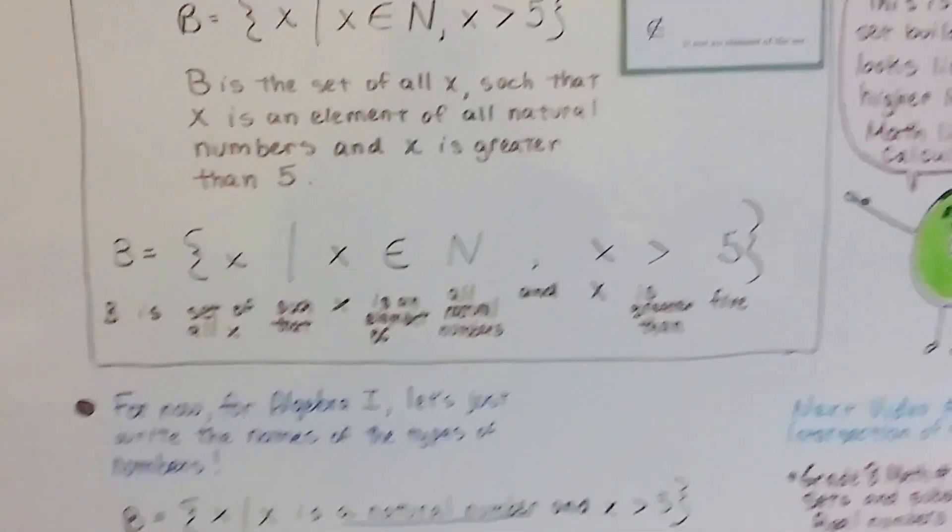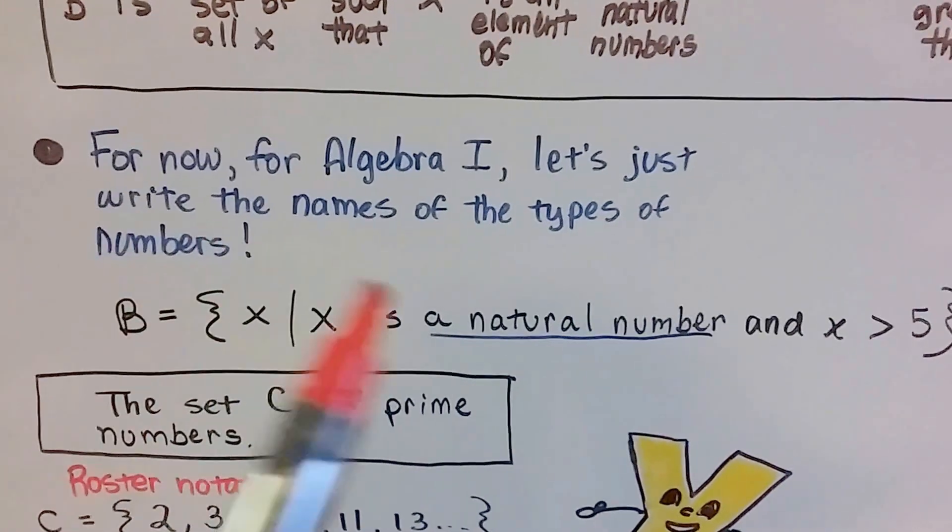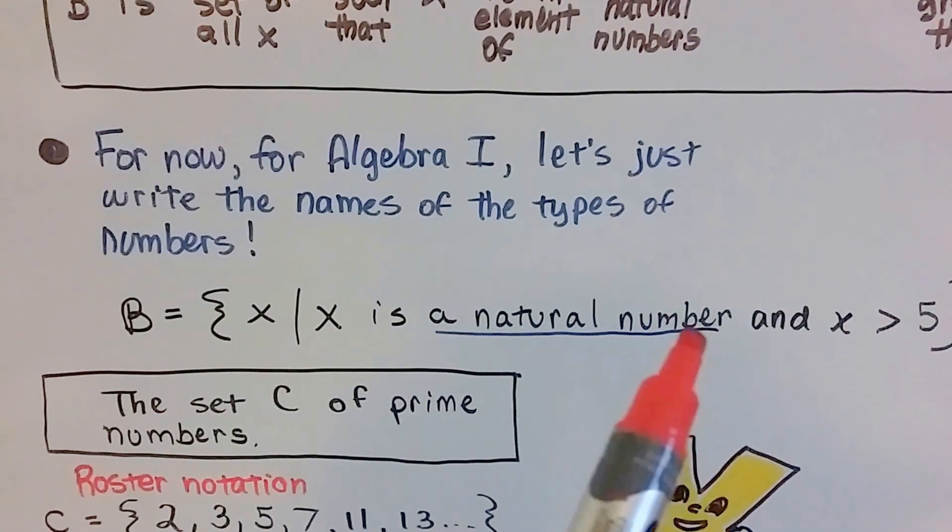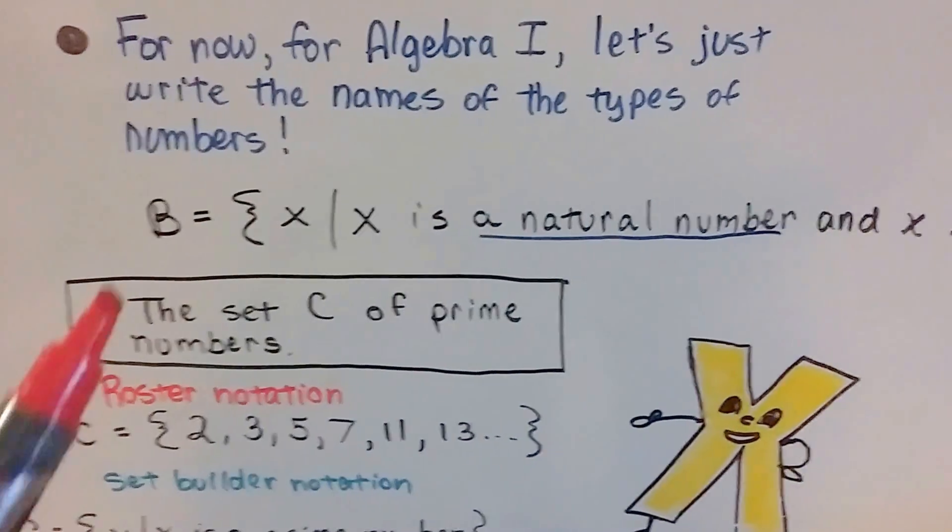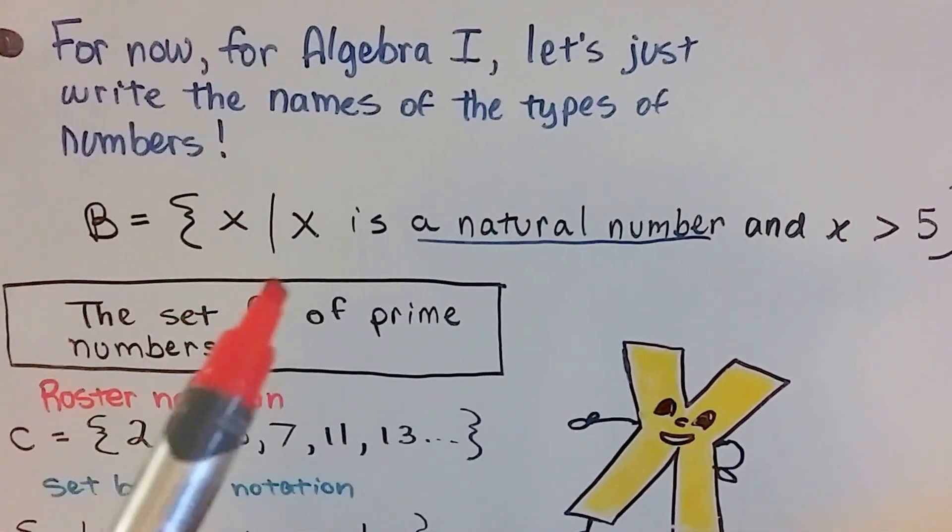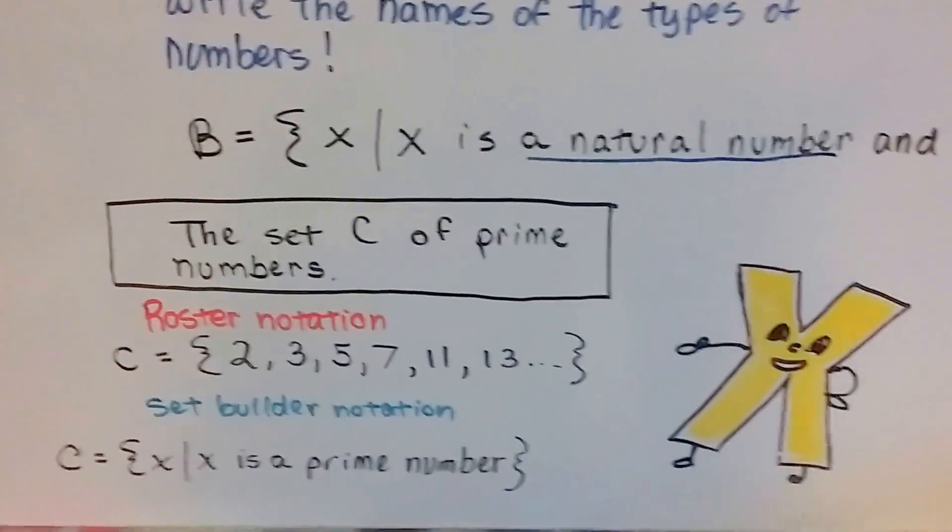We'll talk about that later on. So, for now, for Algebra 1, let's just write the names of the types of the numbers. We'll just write, is a natural number. Is a whole number. So, it would be B equals x. The bar x is a natural number and x is greater than 5. We'll just stick that way for now.